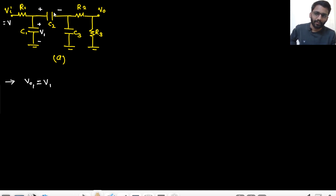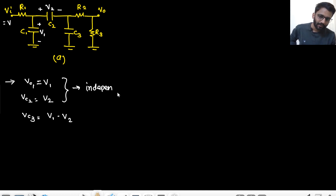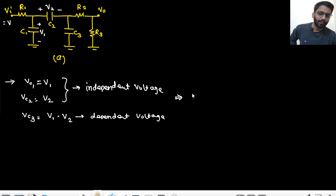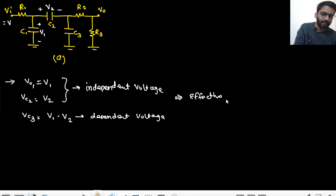I have to give some independent voltage to VC2 as well. Let's assume I am giving V2 voltage, so VC2 = V2. Now you can write VC3 in terms of V1 and V2: VC3 = V1 minus V2. So V1 and V2 are independent voltages, and VC3 is a dependent voltage depending on VC1 and VC2. So there are effectively only two storing elements, making this a second-order circuit.